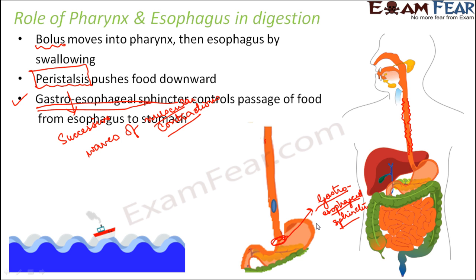This is how pharynx and esophagus play their respective roles in the process of digestion. Real digestion — the breaking down of complex to simpler substances — does not occur in the pharynx or esophagus. But without them, the overall digestive process cannot take place, because food would not be able to reach from the oral cavity to the stomach. So they play an indirect but essential role, without actively participating in digestion itself.